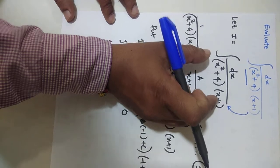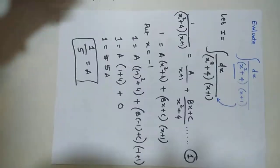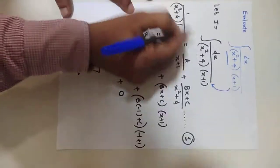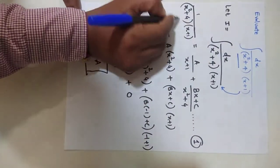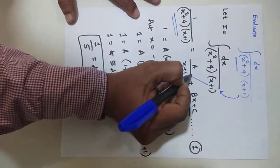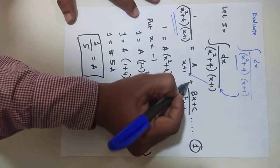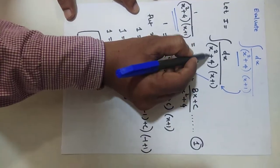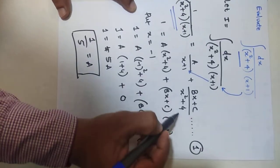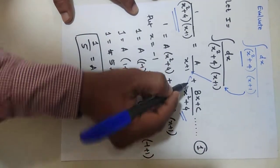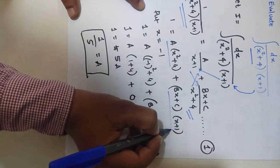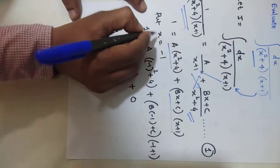Since we have two brackets in the denominator, we have to use the partial fraction method first. We write 1/[(x² + 4)(x + 1)] as A/(x + 1) plus (Bx + C)/(x² + 4). Cross-multiplying, we get the expanded equation.